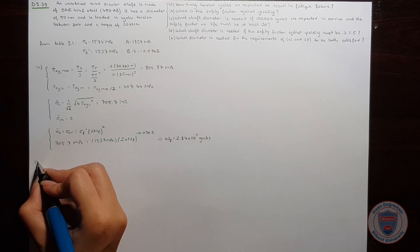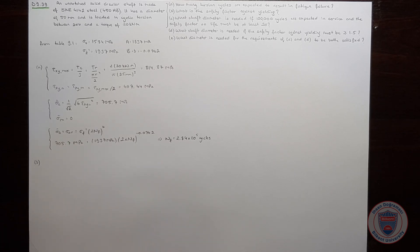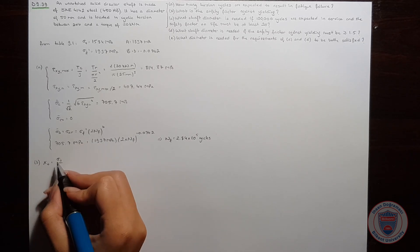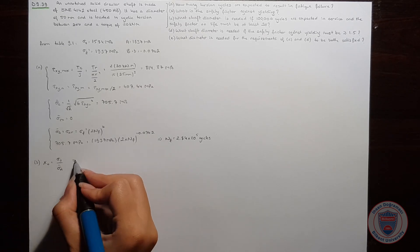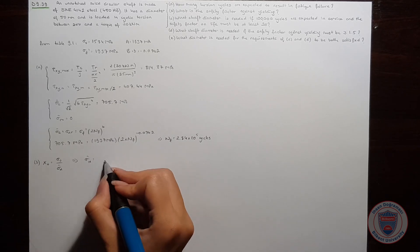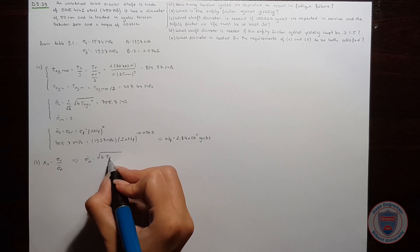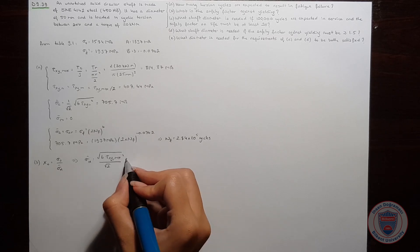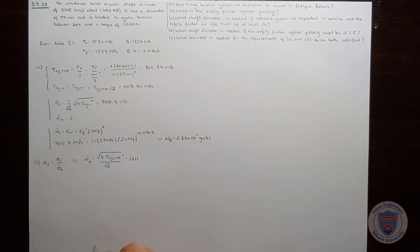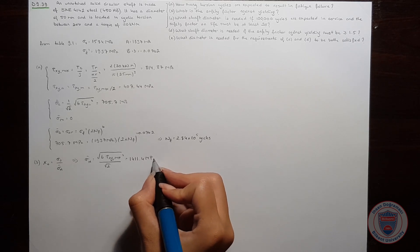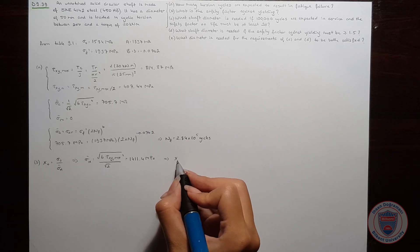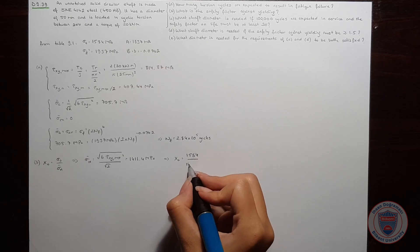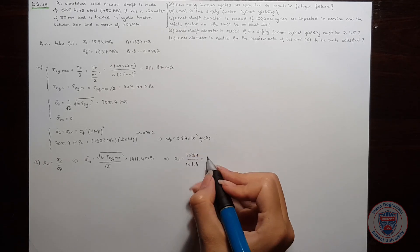Now we move to Part B, where we calculate the safety factor against yielding. The safety factor equals yield strength over the von Mises stress. The von Mises stress equals the square root of 6 times tau_xy_max squared over the square root of 2, which gives 1411.4 MPa. The safety factor becomes 1584 over 1411.4, equal to 1.12.